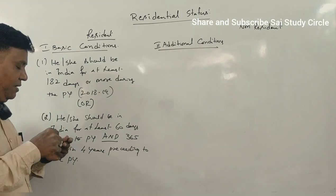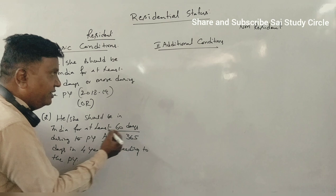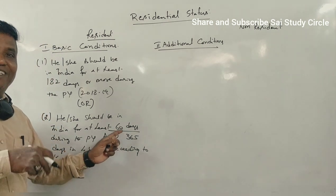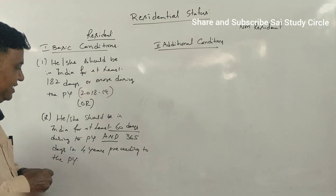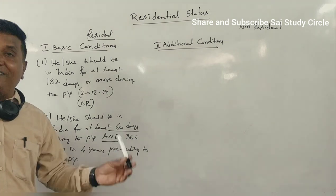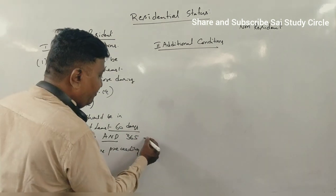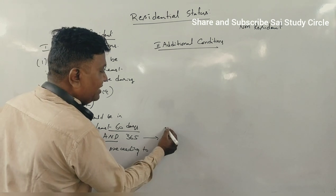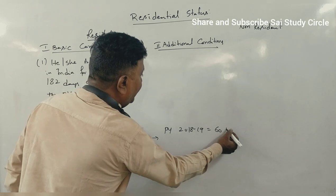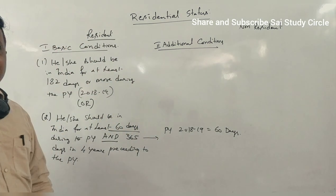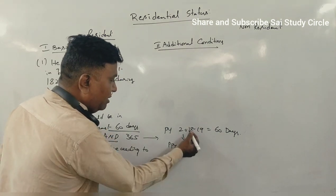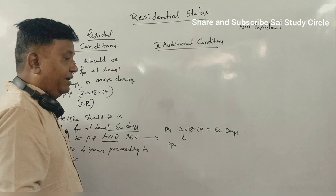During the previous year, a person should be in India for at least 60 days — that is compulsory. And in the 4 years preceding the previous year — for example, if our previous year is 2018–19, then the 4 preceding years would be 2017–18, 2016–17, 2015–16, and 2014–15 — the person should have been in India for 365 days in total across those 4 years.